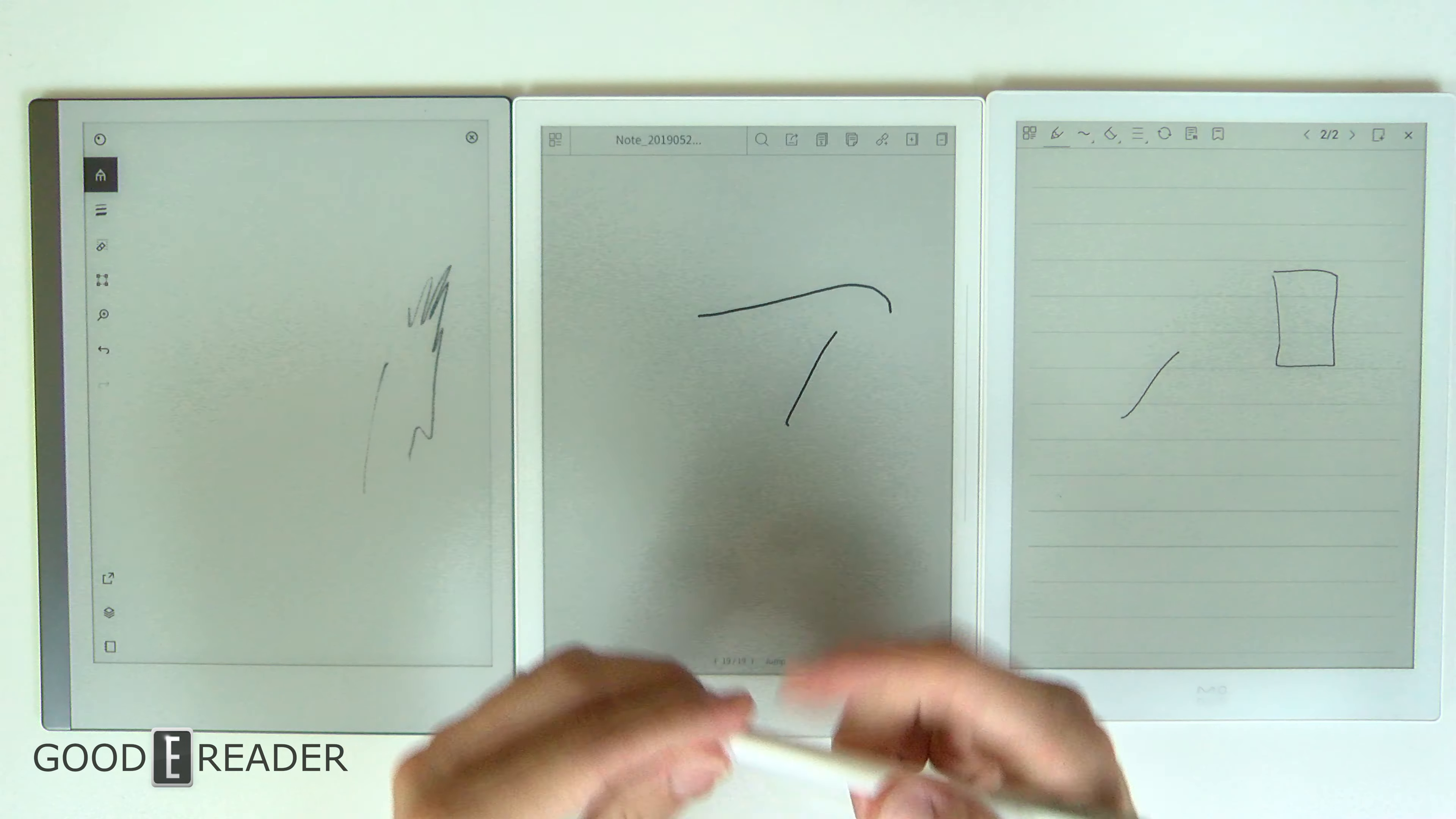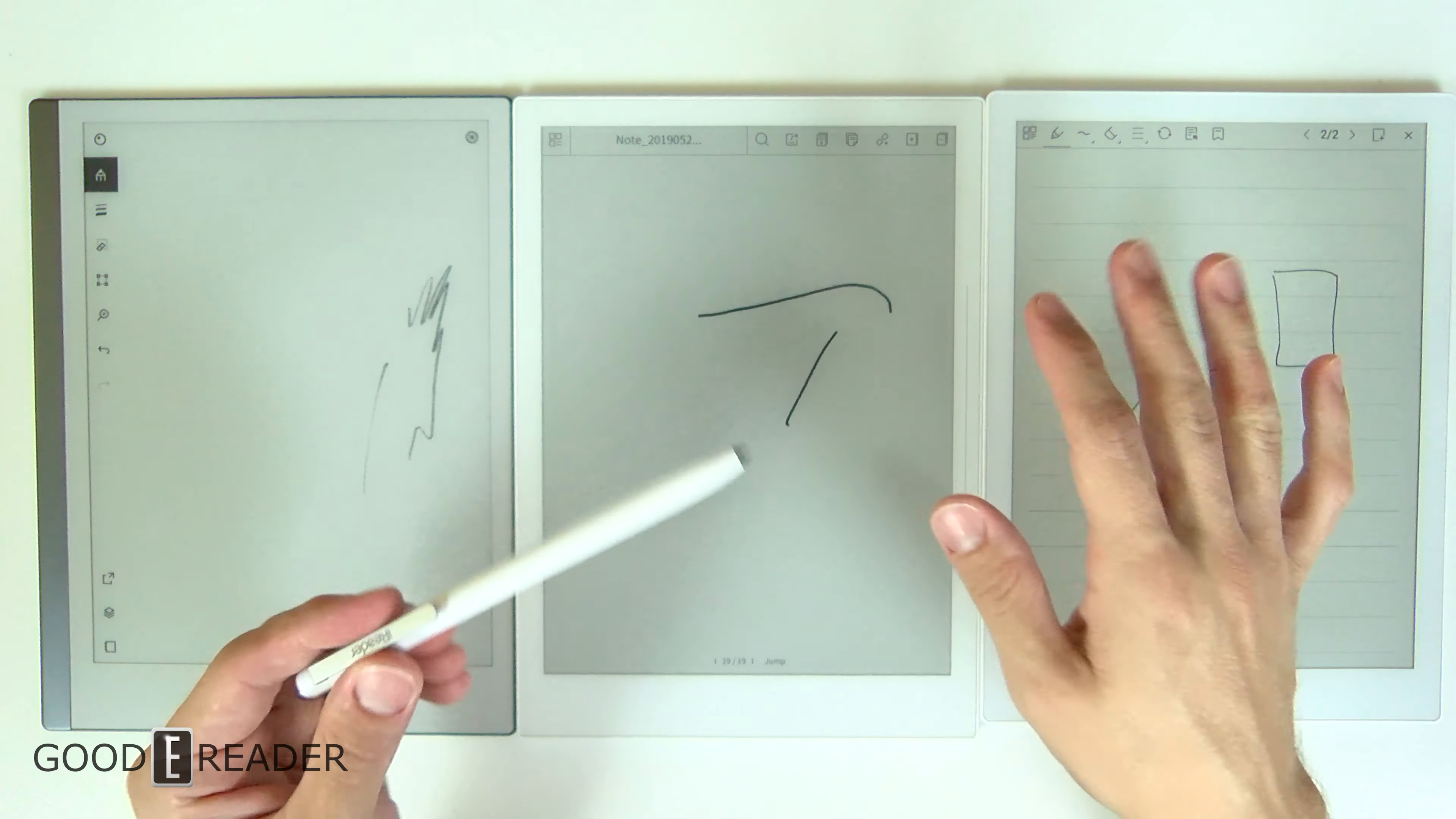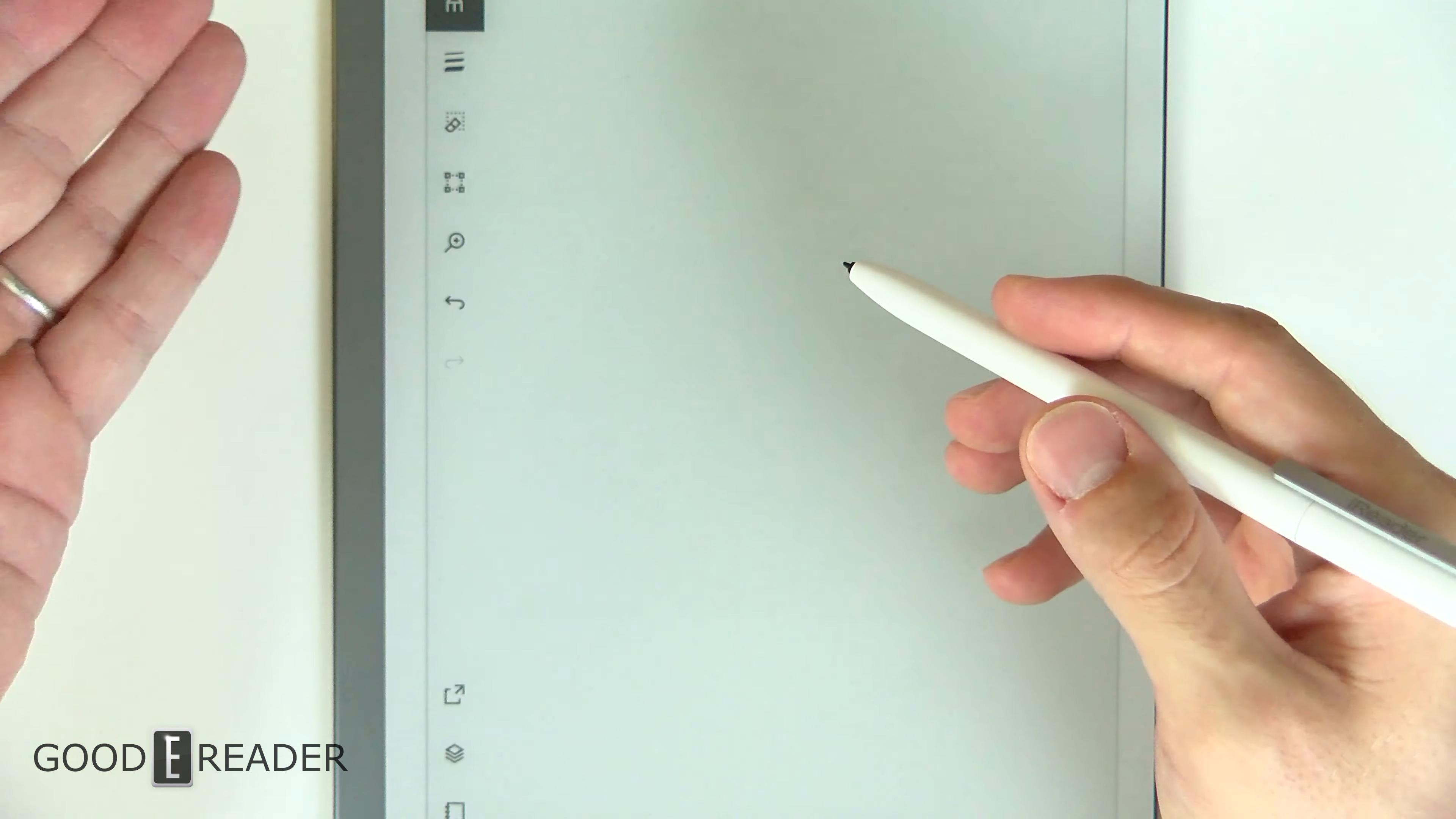It's using a plastic nib, meaning that it's not using ceramic or graphite. And why this is important is because it's not going to scratch any of the other devices that you try to use it on. This device has so much cross-compatibility that even on the Remarkable 2, as you can see here...